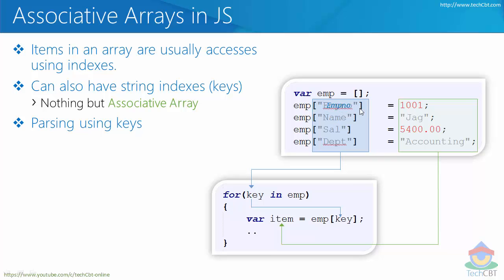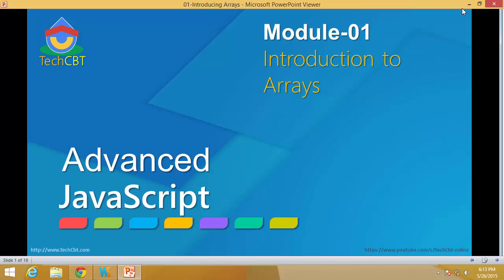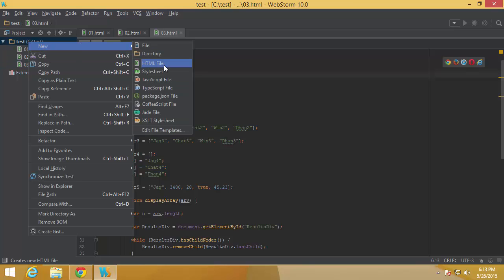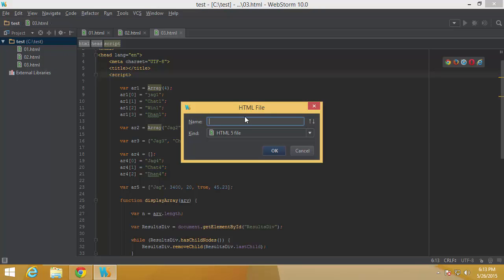For each iteration, each of those keys will be available in the loop variable, and using those keys you can get the value out of it using emp[key]. For example, 'employeeNumber' will be used as a key for the first iteration, and emp['employeeNumber'] will return 1001. So let us have a quick demonstration — let me create a new file.